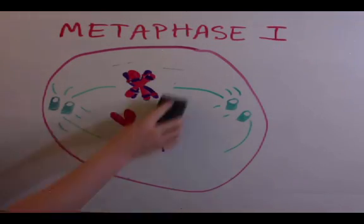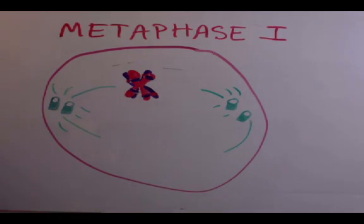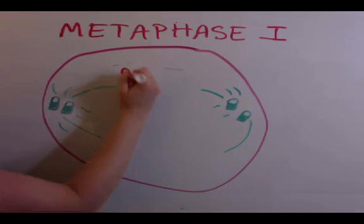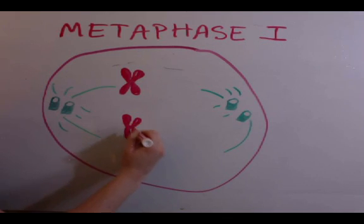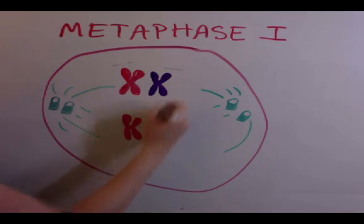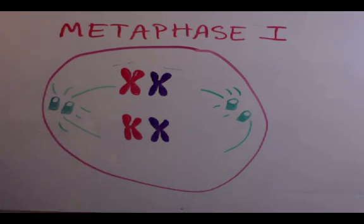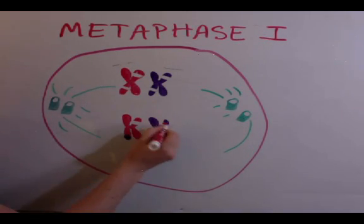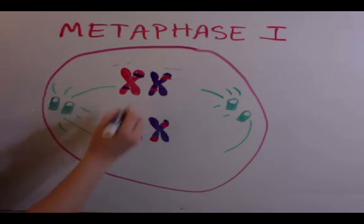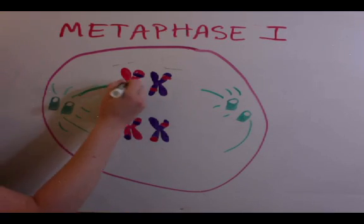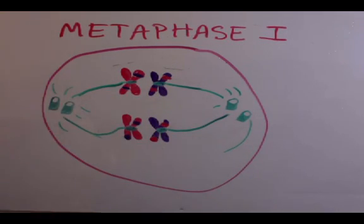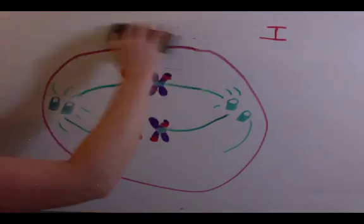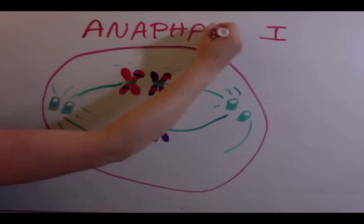Next, we reach metaphase 1, where the pairs of chromosomes are lined up in the middle of the cell, and this is orchestrated again by the microtubules. Then, during anaphase 1, the chromosome pairs are pulled to polar ends of the cell.